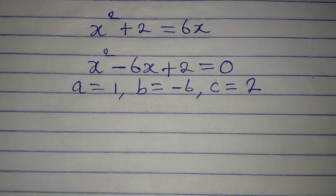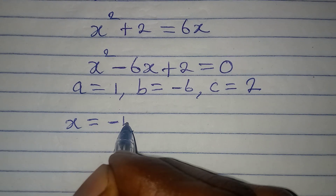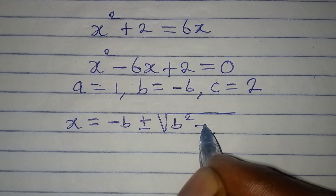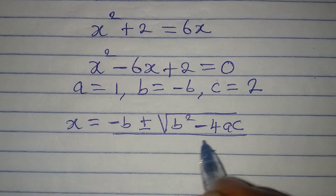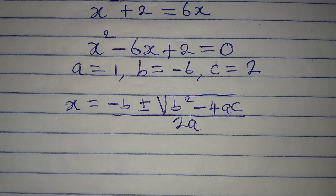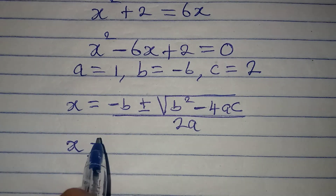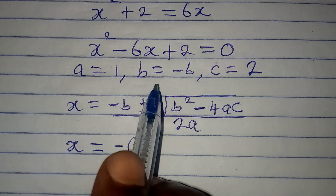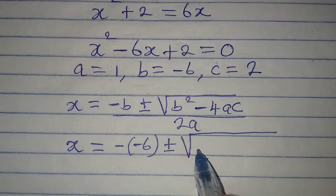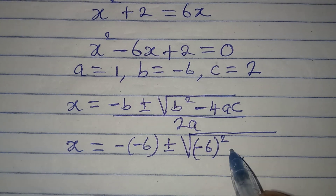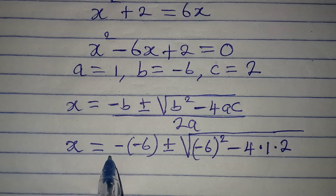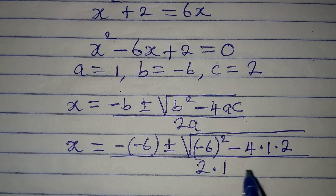The formula is x equals minus b plus or minus the square root of b squared minus 4ac, all over 2a. We now have our a, b, and c so we substitute directly. x equals minus(minus 6) plus or minus the square root of (minus 6) squared minus 4 times 1 times 2, all over 2 times 1.